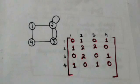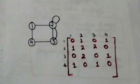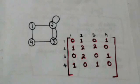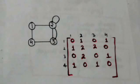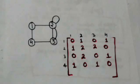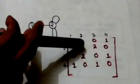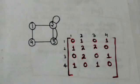The entry at the first row and fourth column is one, and the entry at the fourth row and first column is also one, because there is an edge joining vertex one and vertex four. The entry at the third row and fourth column is one, and the entry at the fourth row and third column is also one, because there is an edge joining vertex three and vertex four. The diagonal entry at the second row and second column is two because there is a loop at vertex two.